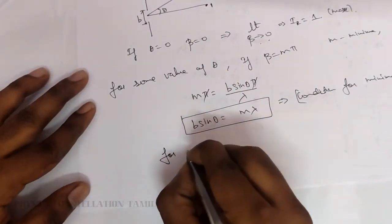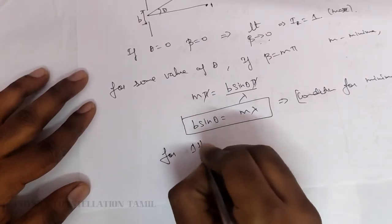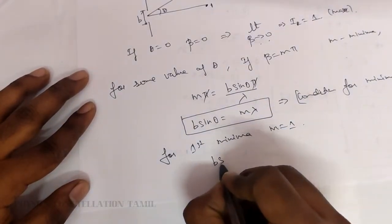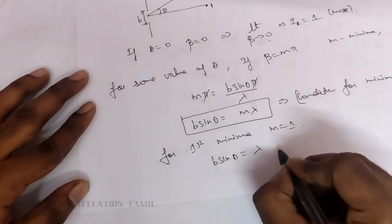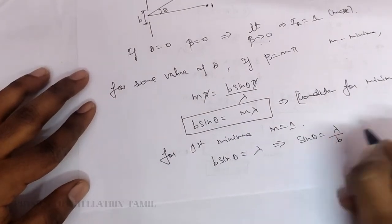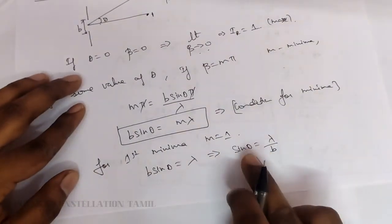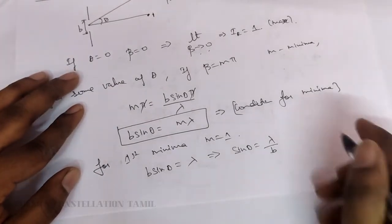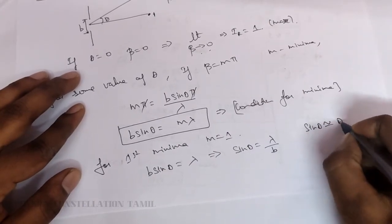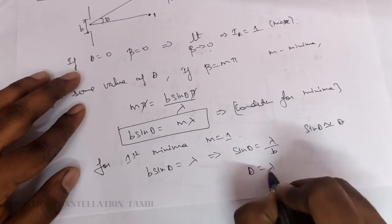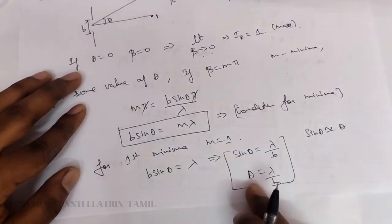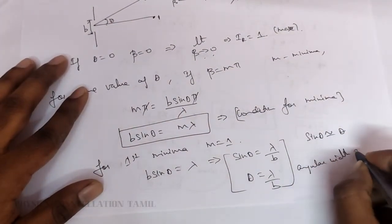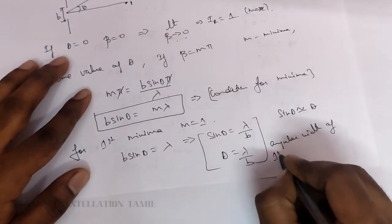For first minima, m equals 1. So B sine theta equals lambda, which rearranges to sine theta equals lambda divided by B. This is the first condition of minima. For small angles, sine theta is approximately equal to theta, so theta equals lambda by B. This is the angular width of the first minima.